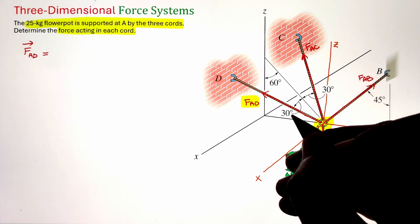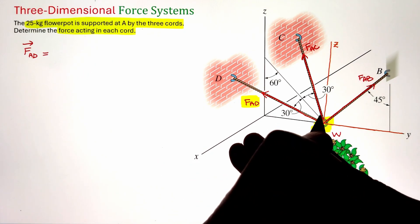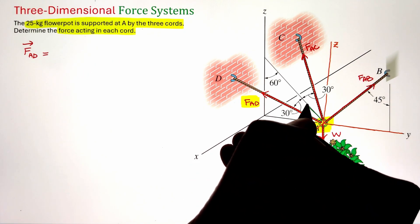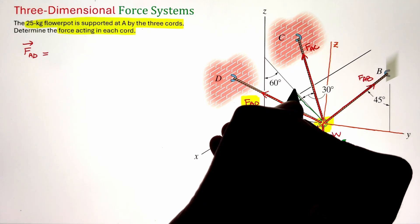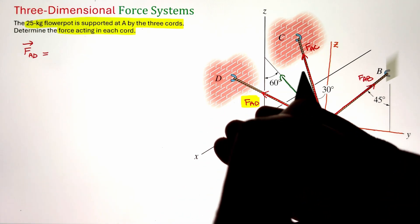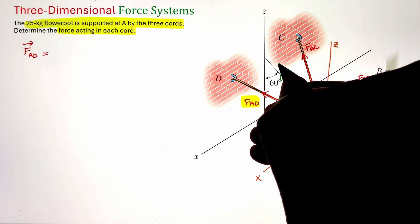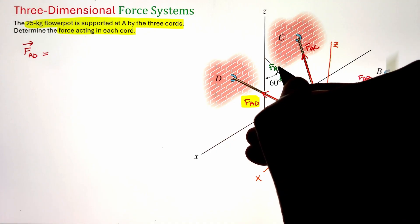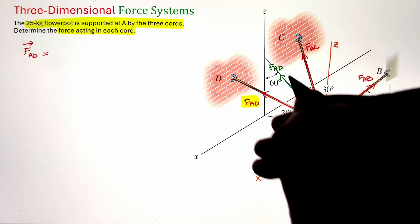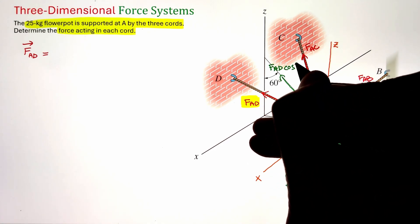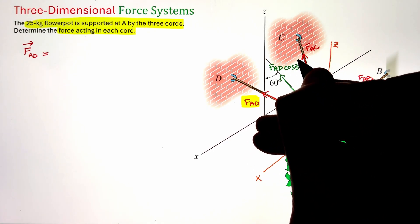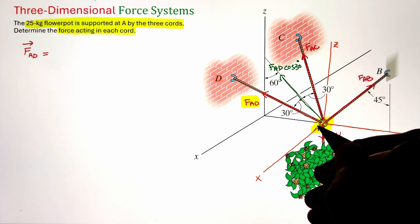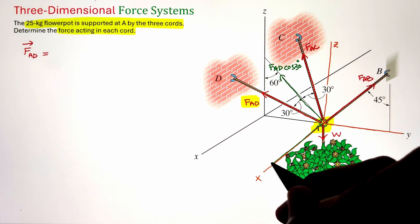Now let's solve force F_AD in Cartesian vector form. Typically, if a system is three-dimensional it is better to solve that system in Cartesian vector form, and once we have all its i, j, and k components we can combine them to figure out our resultant forces. F_AD makes a 30-degree angle with a line that lies on the z-y plane.